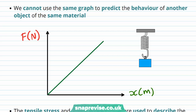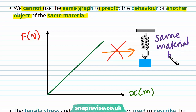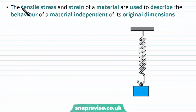Since we get different force extension graphs for different objects of the same material, we cannot use the same graph to predict the behaviour of another object of the same material. So the graph produced for one spring can't be used to predict the behaviour of a different spring, even though it's made of the same material with different dimensions. The tensile stress and strain of a material are used to describe the behaviour of a material independent of its original dimensions.